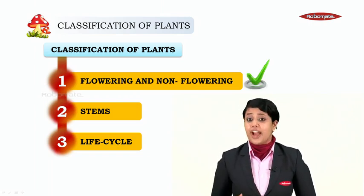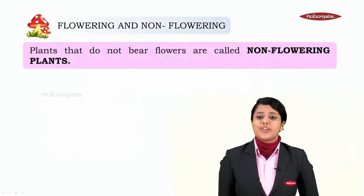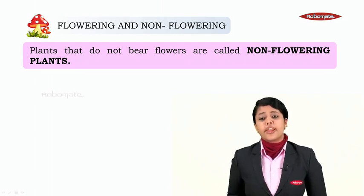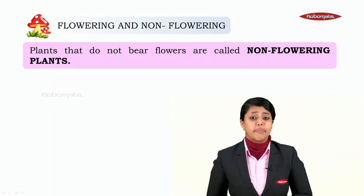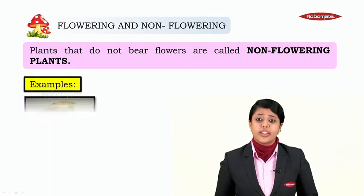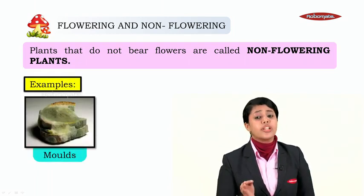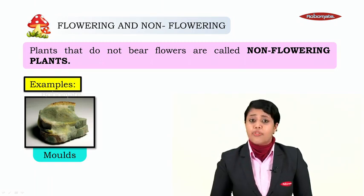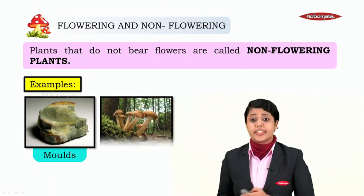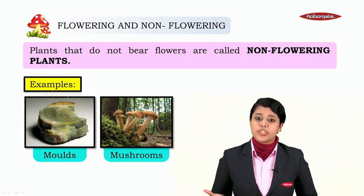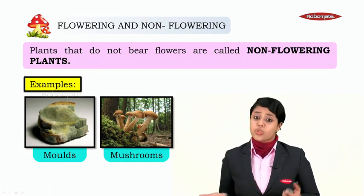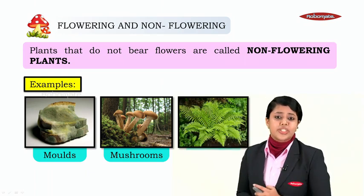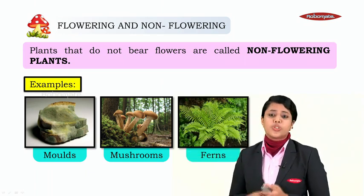Let's study the first method: flowering and non-flowering plants. Plants that do not bear flowers are called non-flowering plants. For example, molds — you must have seen molds growing on bread — molds do not have flowers, so they are non-flowering plants. Next is mushrooms, which also do not have flowers. Another example is fern.